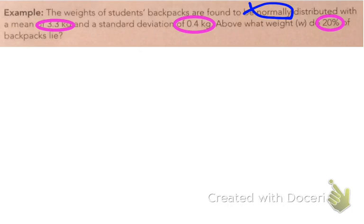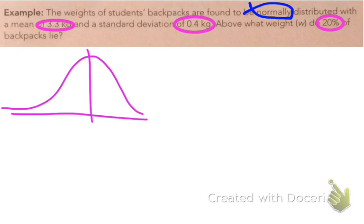So the first thing I'm going to do, as always, is to draw my normal graph. We've got our lovely normal distribution with our mean of 3.3 and our standard deviation of 0.4. So this is a little bit different to what it has been. Note that this has changed.